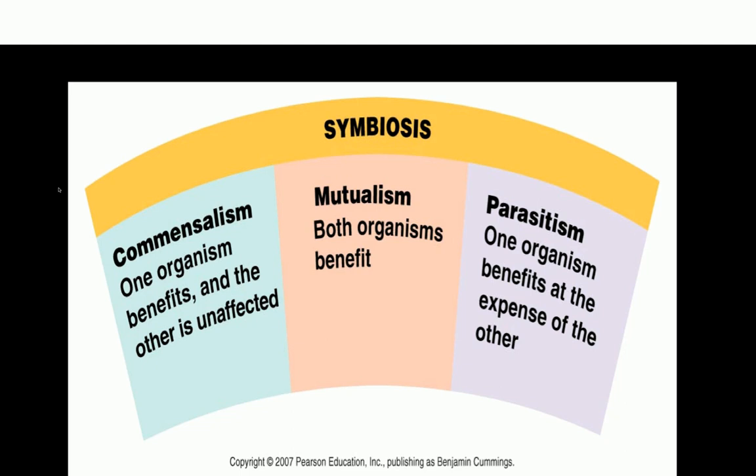Then we have mutualism, where both the parasite and the host benefit from the relationship. For example, E. coli, a bacterium which is a normal commensal of the intestine, uses the nutrients present in the intestine and provides vitamin K to humans. So that is a mutual relationship where both the parasite and the host get something out of it.